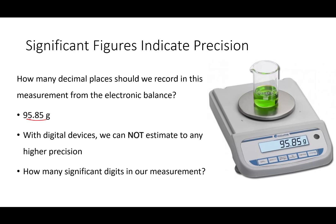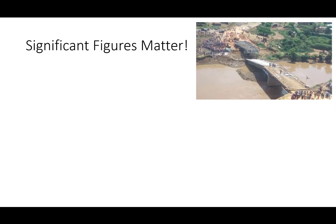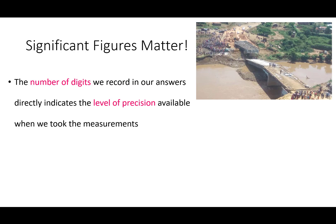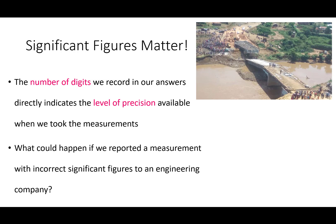And it is one, two, three, four significant digits. Significant figures do matter. The number of digits we record directly tells others about the level of precision for when we took the measurements. Another way of talking about that is the tolerance of our measurements, how far off our measurements can be.